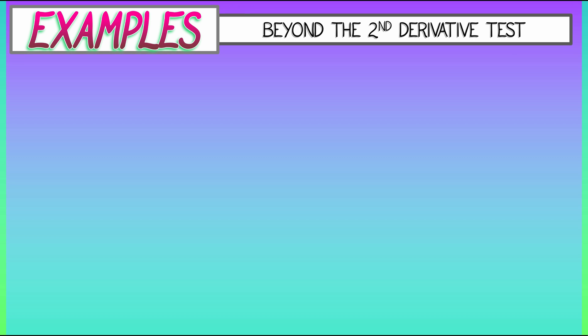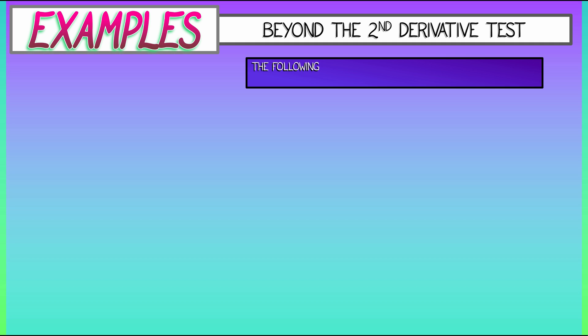Let's consider a few examples of this, examples that go beyond the second derivative. The following functions have degenerate critical points at the origin. That means the second derivatives also vanish. Let's try to classify them, whether they're maxima, minima, neither.